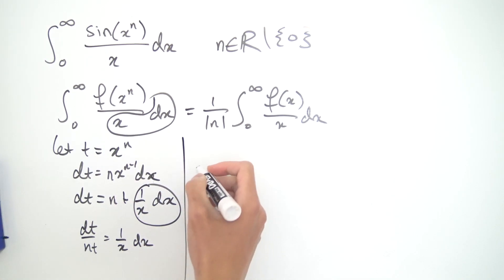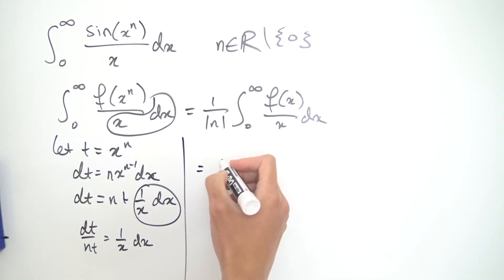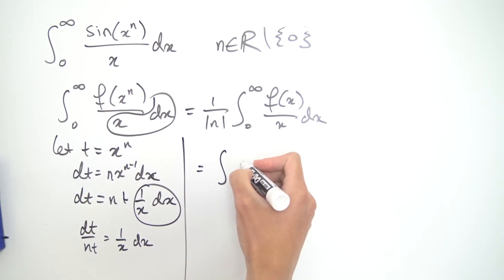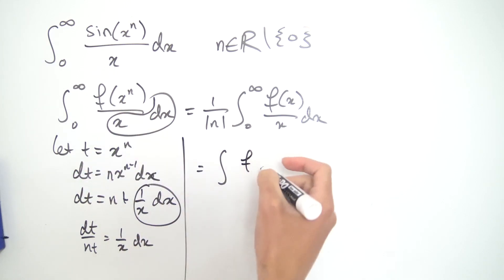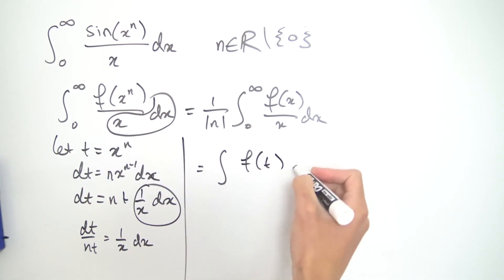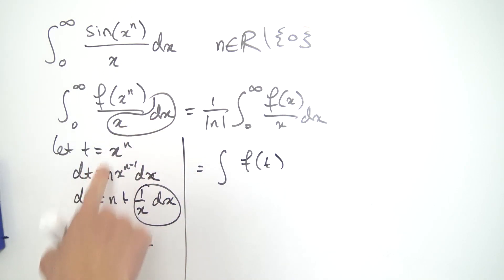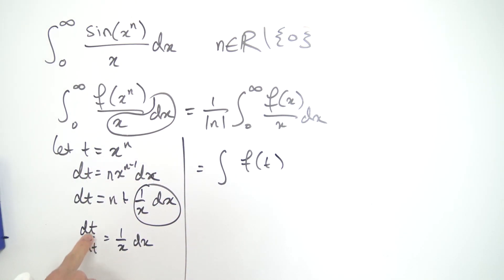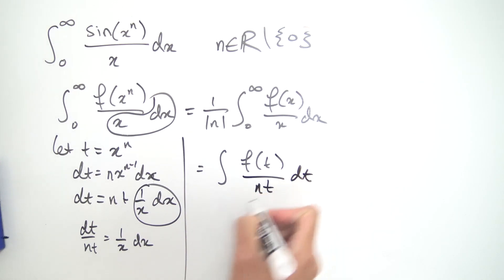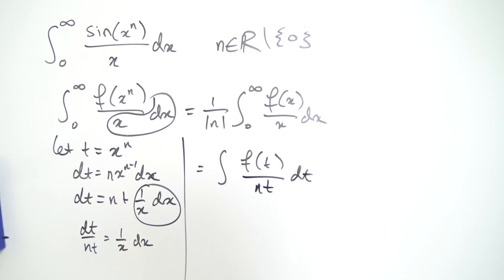Now we can plug everything in. We have the integral — we'll worry about the bounds shortly — where f of x to the n is exactly our t, so f of t, and dx divided by x is dt divided by nt. So we have f of t times dt divided by nt.